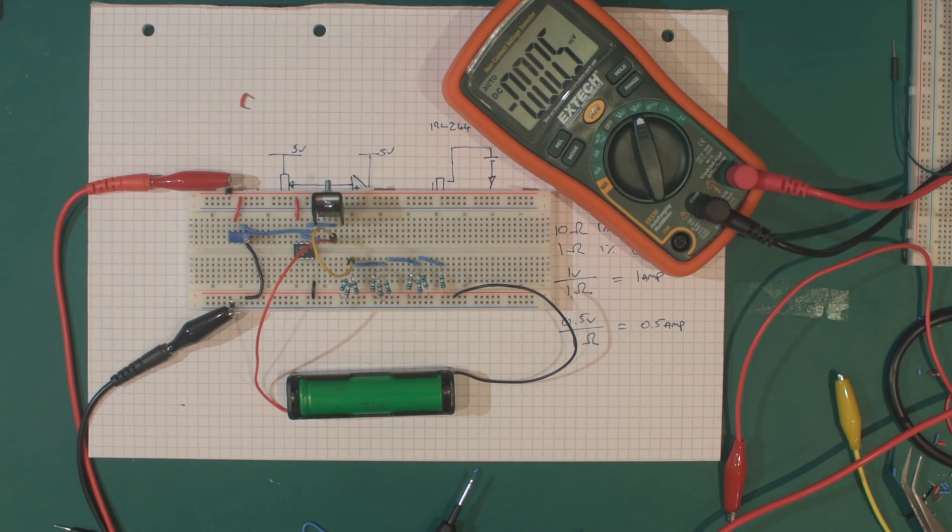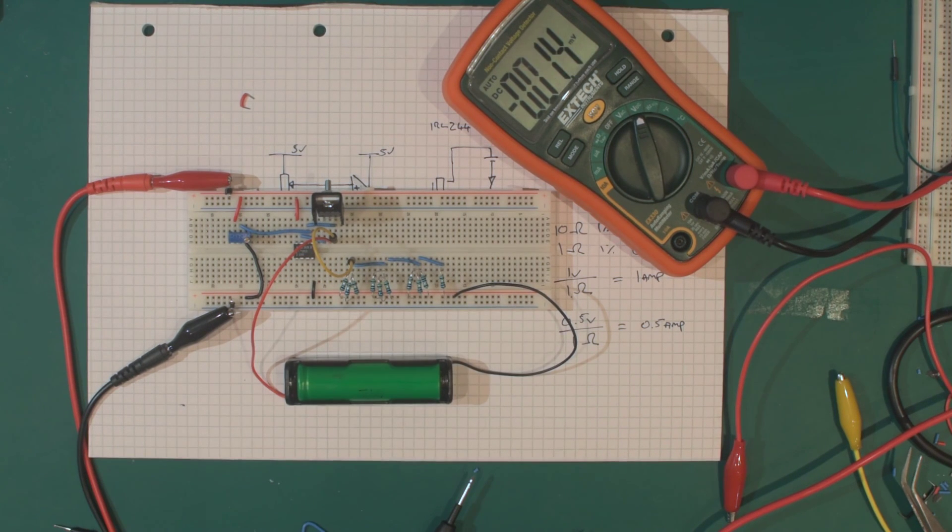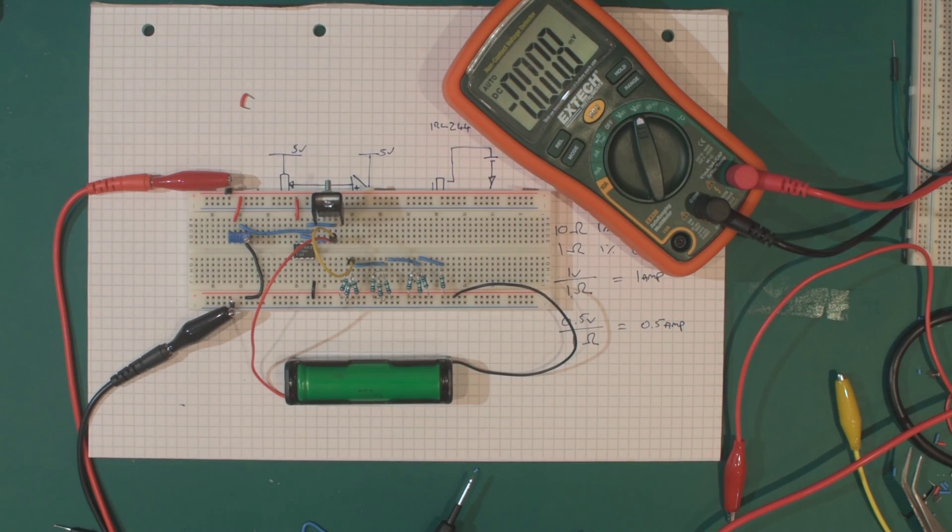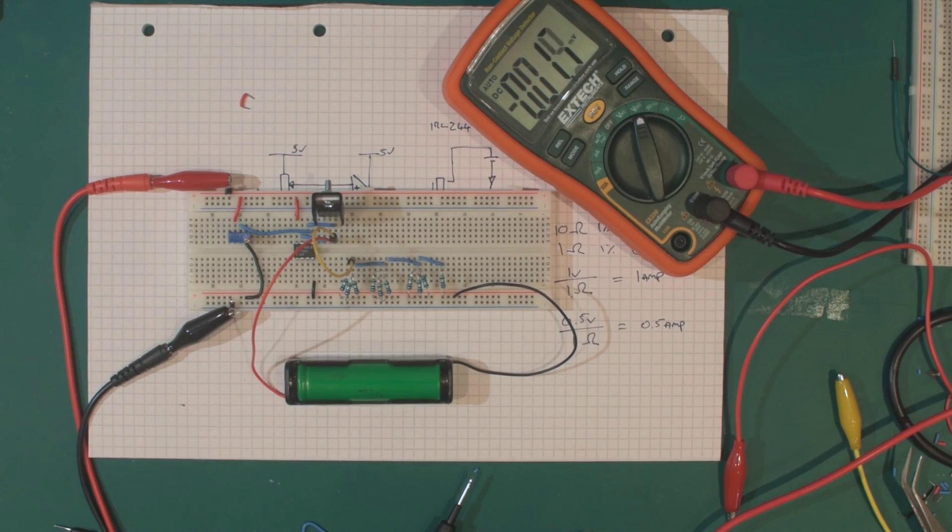I think I'm going to leave it there for today. We have a constant current load working with a single cell, and it is discharging. For next time I need to order bigger heat sinks for this MOSFET and I will figure out a way to replace this potentiometer with a microcontroller. In the next video I'll also look at placing some voltage measurement across this battery so we know when to cut off the discharge. Thanks for watching, and I'll see you next time.